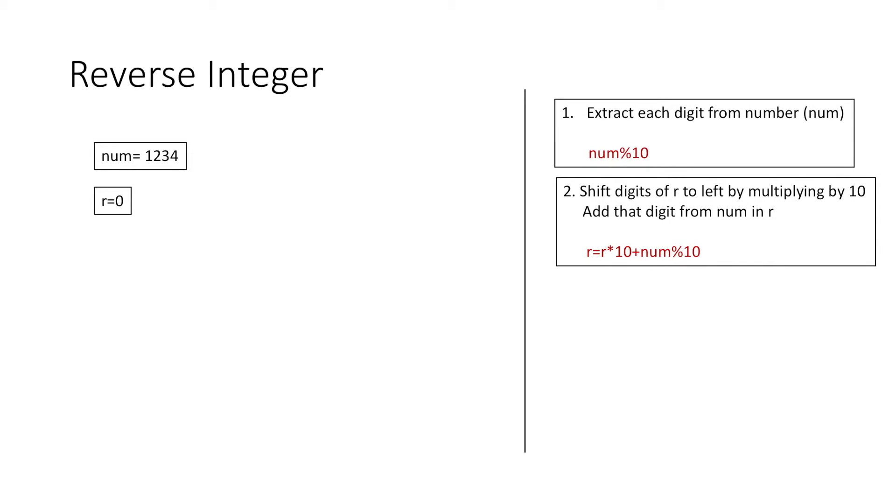That is, r would be equal to r multiplied by 10 plus the digit we extracted from the number. Next we will divide num by 10 so that we can remove the digit we extracted and move on to the next digit. So let's actually implement this to understand it.